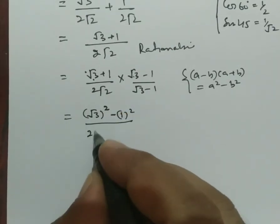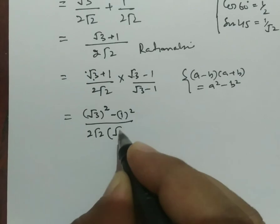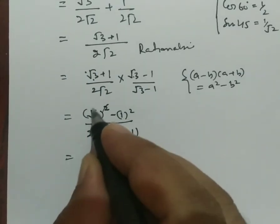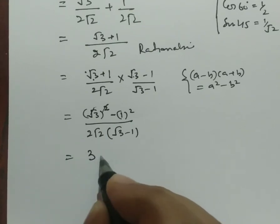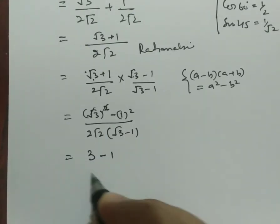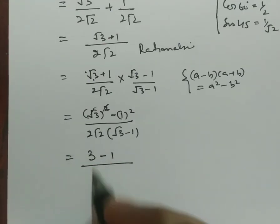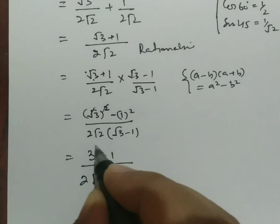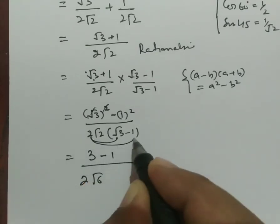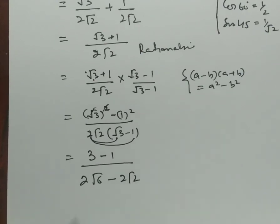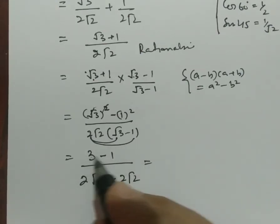Now 2 root 2 times root 3 minus 1. Square and root get cancelled, remaining 3. Square 1 is always 1. So multiply this: 2 root 6, multiply this, then multiply here minus 2 root 2. So 3 minus 1, that is 2, over...